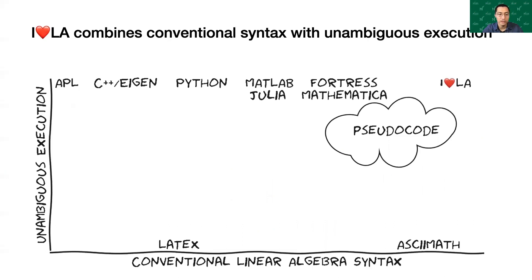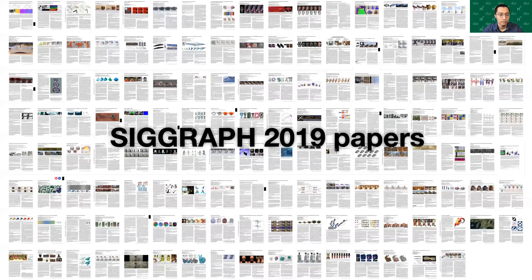Existing environments for inputting linear algebra notation do not consider the interpretability of the expressions. Existing programming languages can be unambiguously compiled, but use a syntax quite unlike conventional mathematical notation. So the code, while readable, cannot be compiled or validated. I❤LA combines the conventional syntax with unambiguous execution.